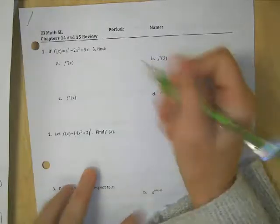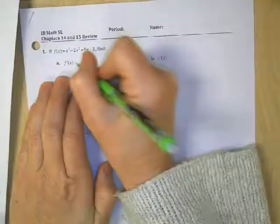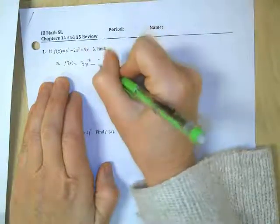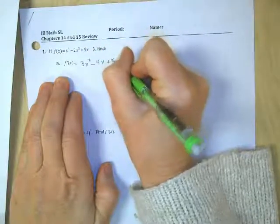So this entire page is going to be no calculator. We are going to take the first derivative. So I'm bringing down my exponent, 3x squared minus 2 times 2 is 4x plus 5. There's our first derivative.